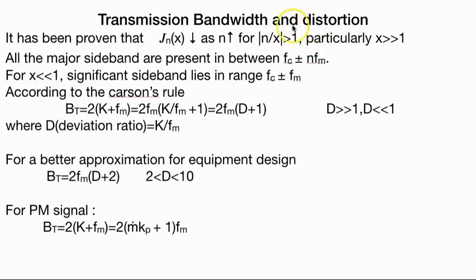We have transmission bandwidth and distortion. It has been proven that Jn decreases as n increases for n/x greater than 1. All the major sidebands are present between Fc plus minus nFm. For X less than one, significant sideband lies in range Fc plus minus Fm.